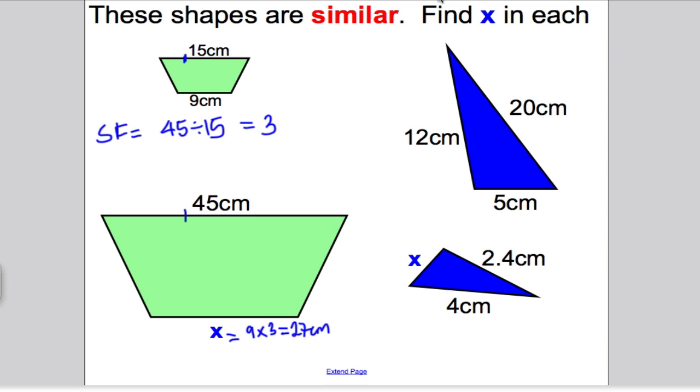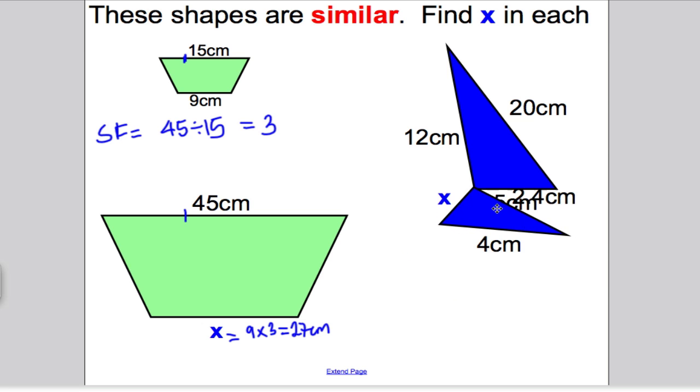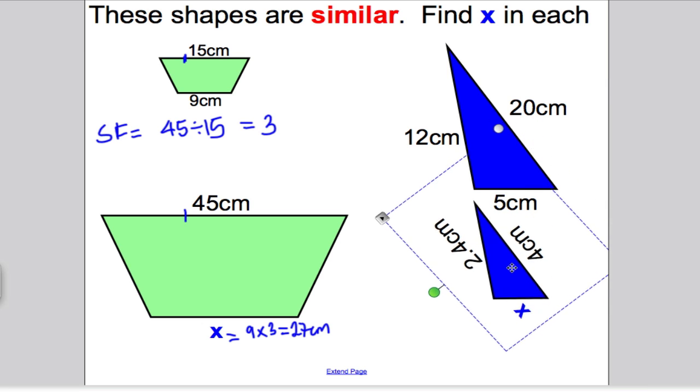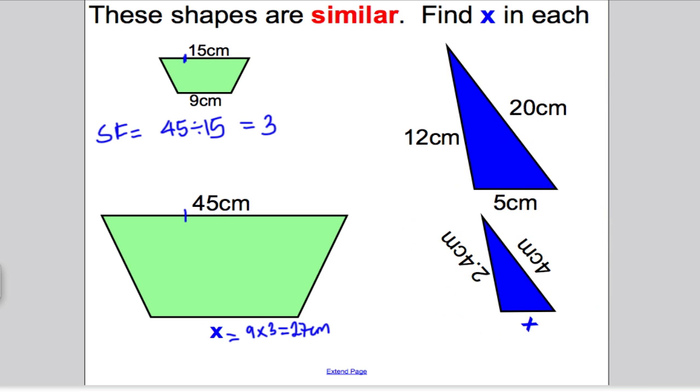Now, these two shapes are also similar. If I was ever doing this in the exam, I'd just draw the shapes the same way up to make my life easier. So I'd pick that shape up and redraw it so it's the same way up as the other one, just so I don't get confused on the sides. Therefore, this one here is 4 centimetres, this is 2.4, and we're asked to find X here.